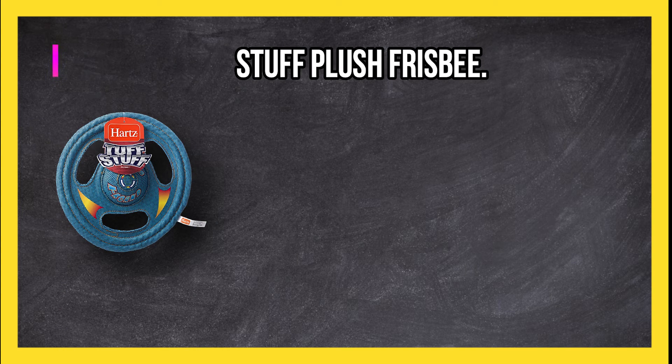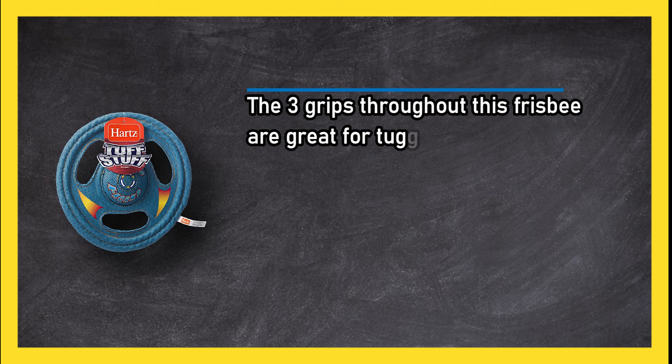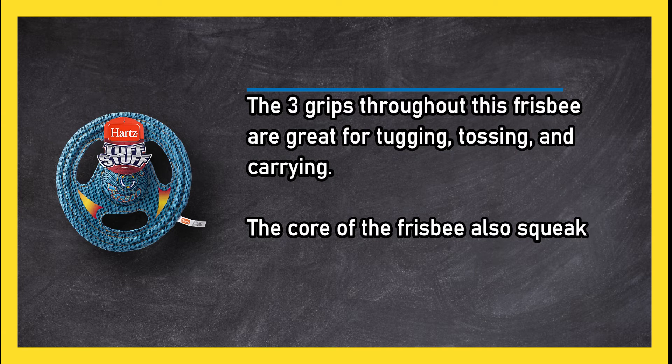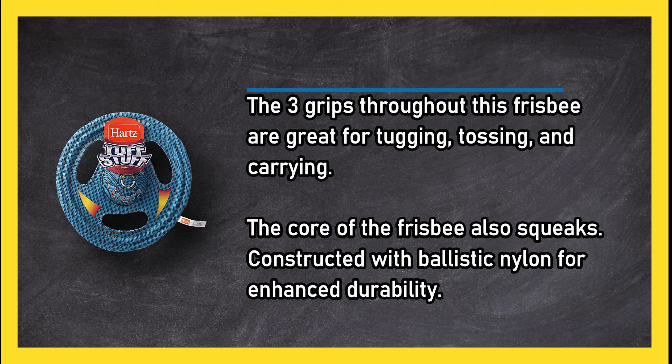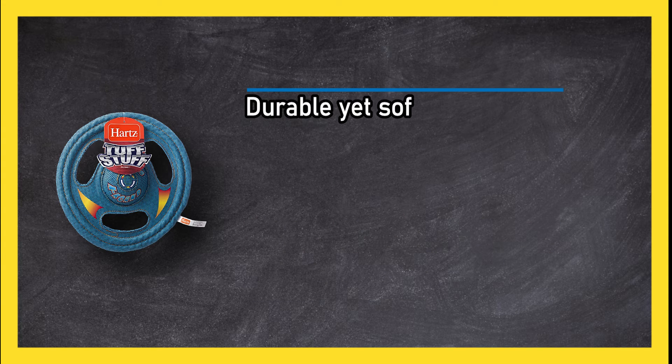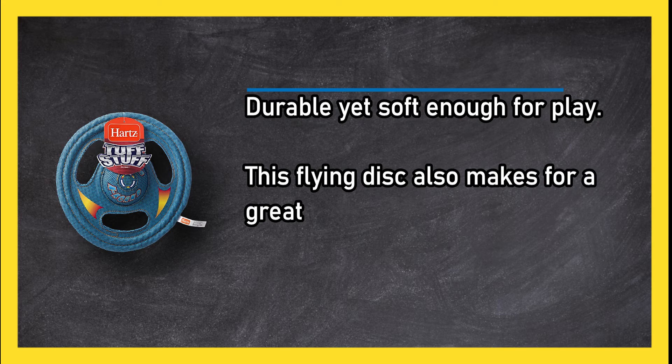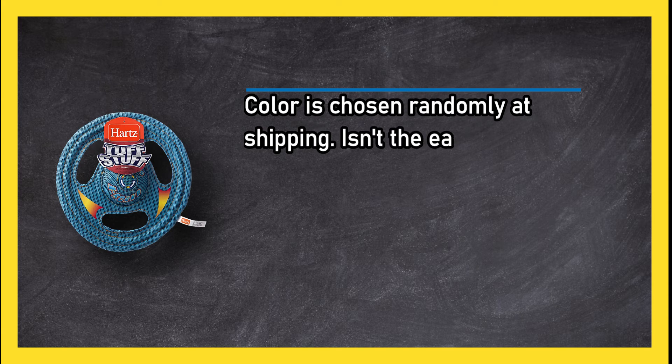The three grips throughout this frisbee are great for tugging, tossing, and carrying. The core of the frisbee also squeaks. Constructed with ballistic nylon for enhanced durability, durable yet soft enough for play, this flying disc also makes for a great tug of war toy. Color is chosen randomly at shipping. Isn't the easiest to throw.